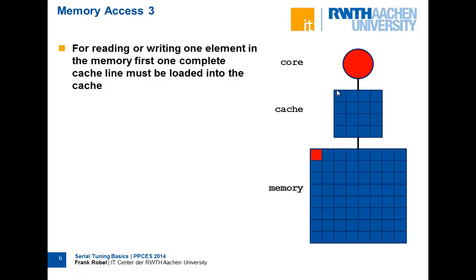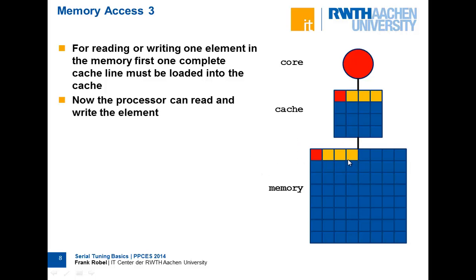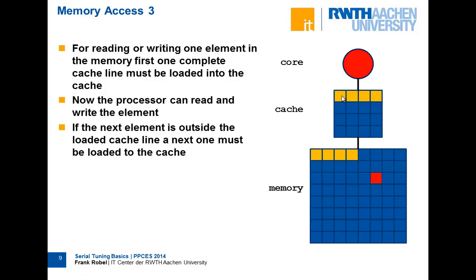So first we think about what happens if we want to access one element from the main memory. We have to load a complete cache line. It's loaded into the cache, and at that moment the core can access the element — can read it, can write it. If you want to access another element that is outside this cache line, a new cache line must be loaded. It costs a lot of cycles — I think several hundred.